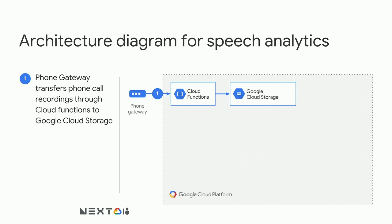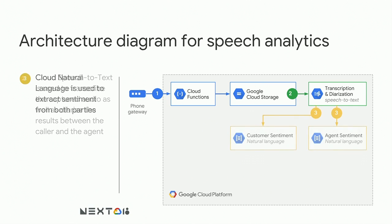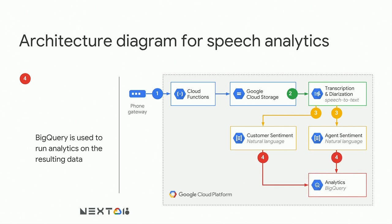Here's an example architecture for how this could be used in speech analytics. You could have audio coming in from a phone gateway — a lot of these gateways were built many years ago and don't have the ability to separate audio into different channels, so it comes out as mono. It goes to Cloud Speech-to-Text for transcription and diarization. If you want to analyze sentiment, you really want to analyze each speaker separately, because what matters is not the average but each speaker individually. You can analyze the customer and agent separately and feed each into an analytics engine like BigQuery.